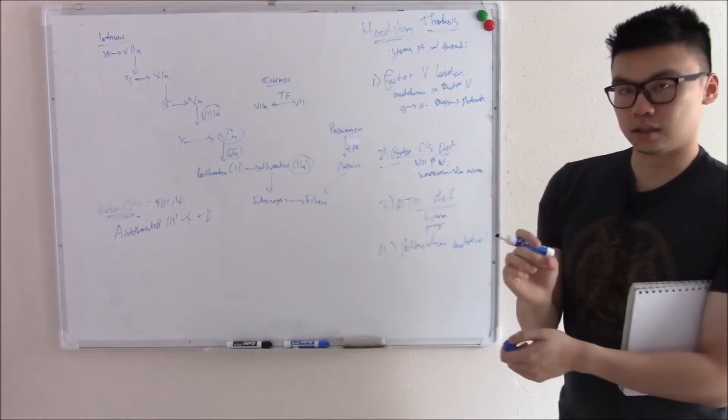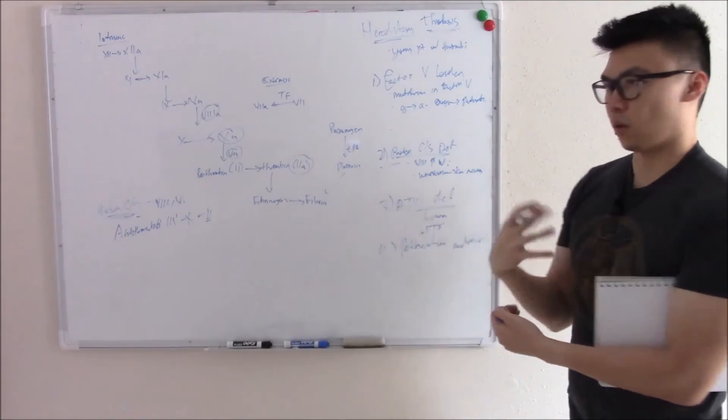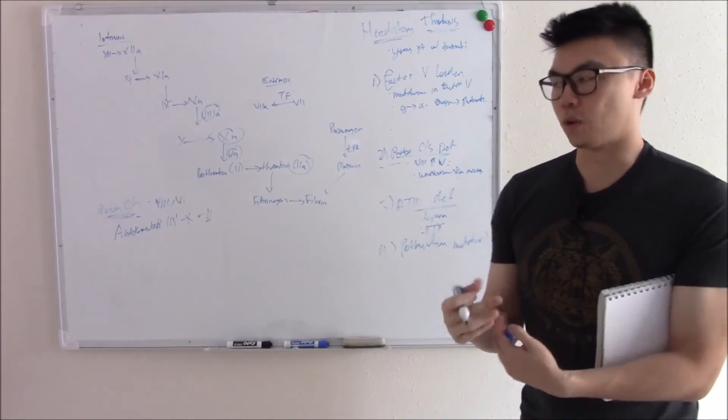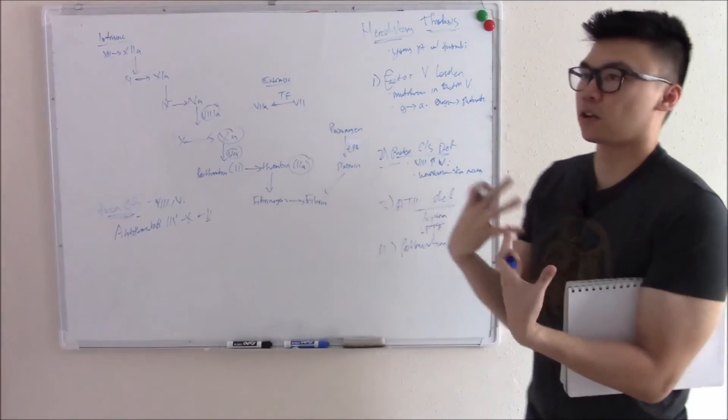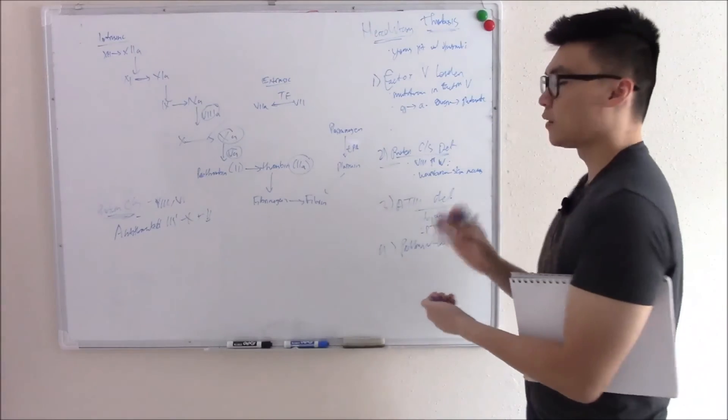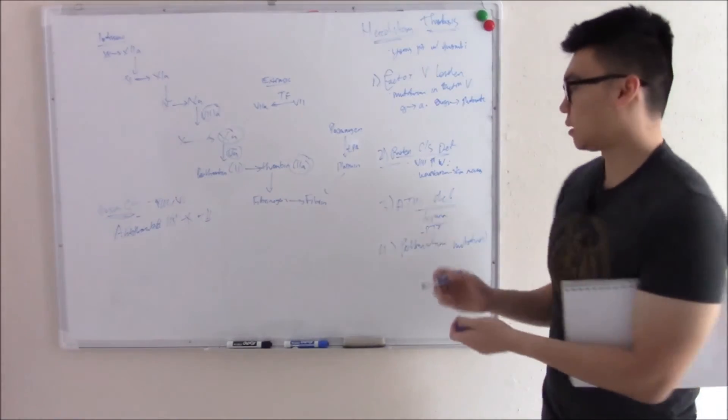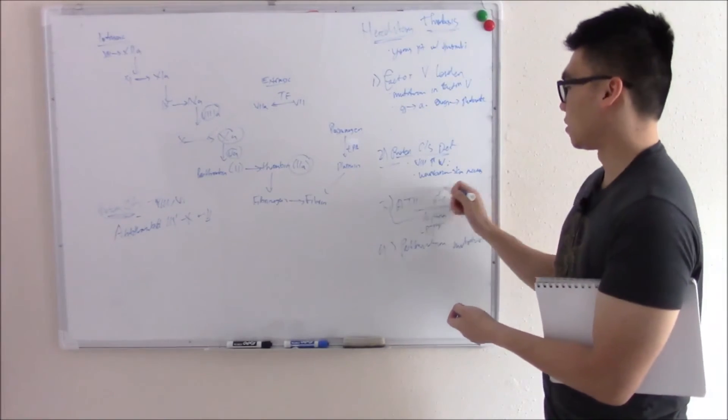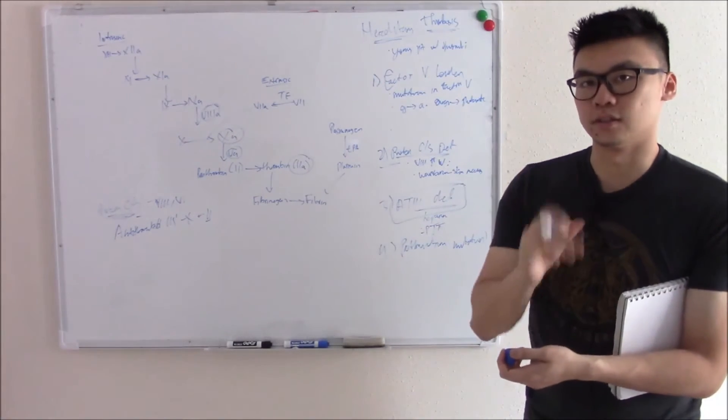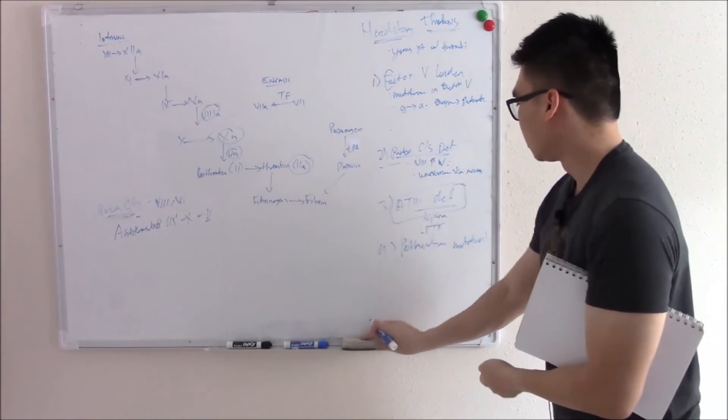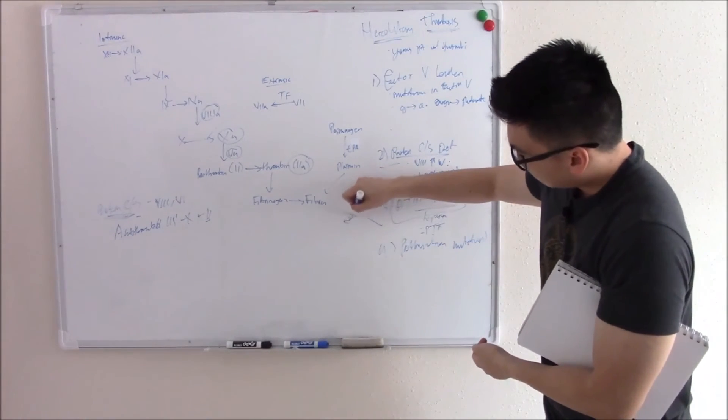So you'll monitor with heparin use. You'll give heparin, hoping to see a change in PTT and it won't change. So you'll give a little bit more. Won't change. Give a little bit more. More, more, more, and then it'll change. Then you'll finally overcome that deficiency. So if you give a patient heparin and you're not seeing a change in PTT like you suspect, then you're thinking AT3 deficiency. Antithrombin 3 deficiency.